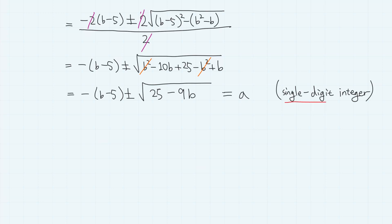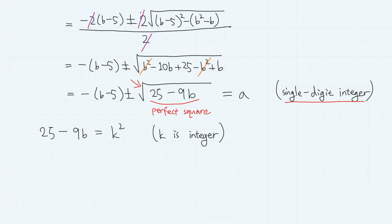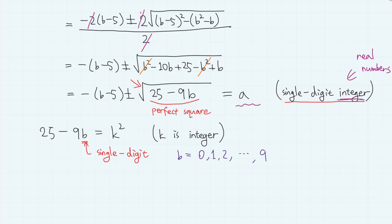This must equal A, which must be a single-digit integer. This means the square root part must be an integer, so the inside of the square root must be a perfect square. Additionally, since A is a real integer, the inside of the square root must also be non-negative.